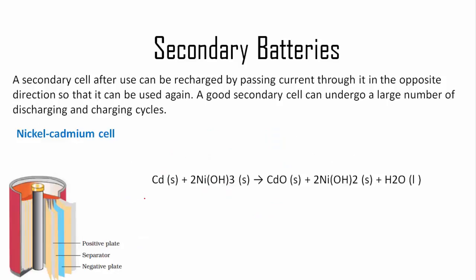Another secondary battery is nickel-cadmium cell, which looks like a dry cell in appearance but is actually a secondary battery. We use rechargeable batteries in our cameras, and those are nickel-cadmium cells. The reaction taking place is that cadmium is reacting with a complex of nickel hydroxide like Ni(OH)₃.